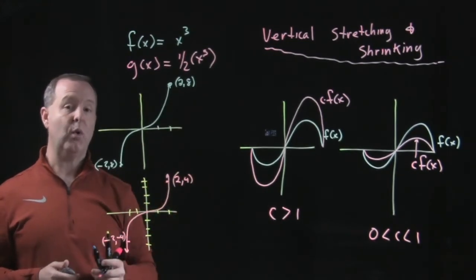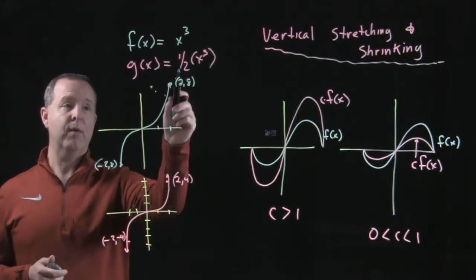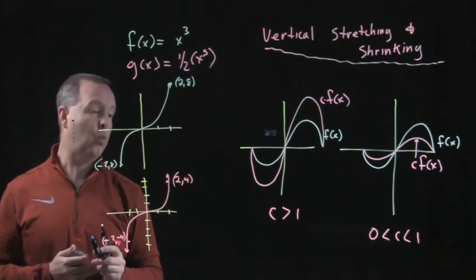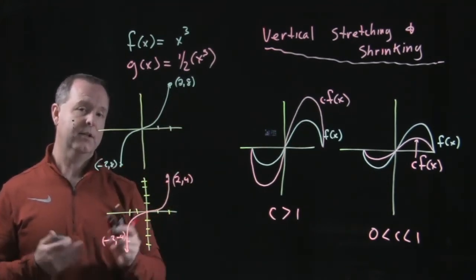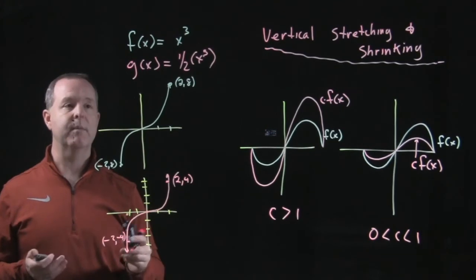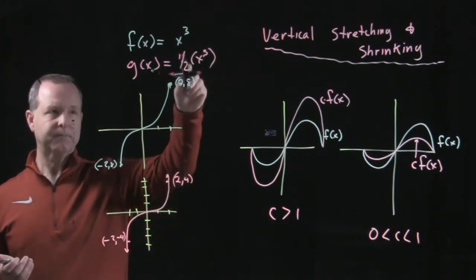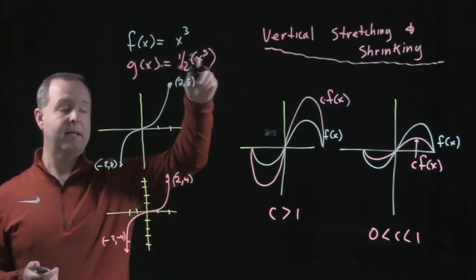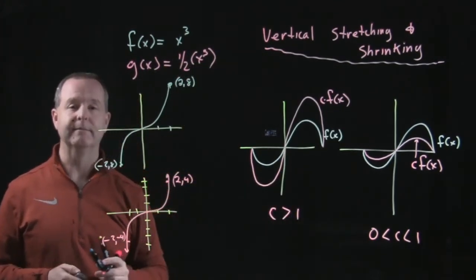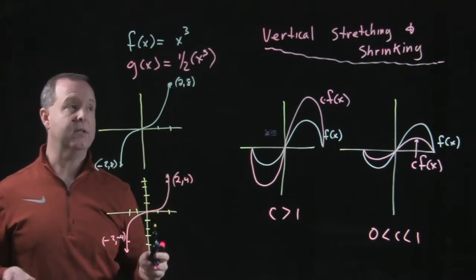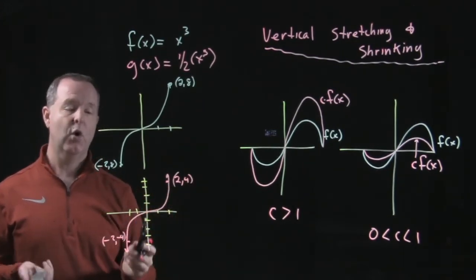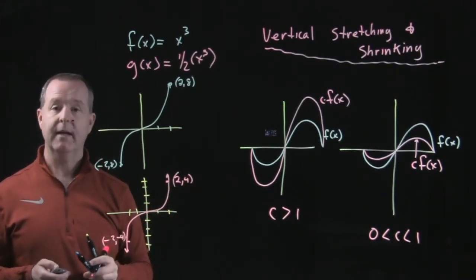If this graph were stretched, I would have a constant greater than 1 — like 2, 3, or 10 — a positive number greater than 1. I hope that helps as we look at how to vertically stretch or shrink a graph.